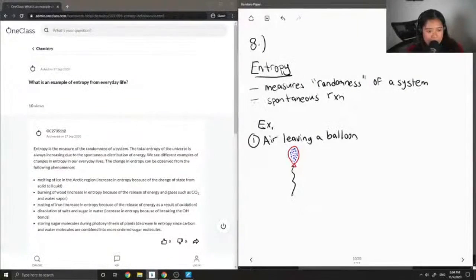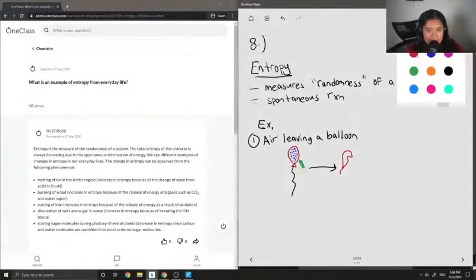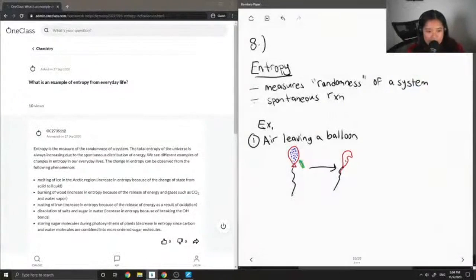Let's say someone came and hit it with a needle. This is supposed to be like a sharp dagger. You break the balloon, puncture a hole in it, and all these air molecules leave. This is a spontaneous reaction and an example of an increase in entropy.